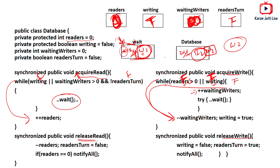If you observe this algorithm, both readers and writers get a fair share. The additional variables readers_turn and waiting_writers ensure fairness: if waiting_writers is one or more, the system asks readers to wait and gives writers a chance to write. If readers_turn is true, the system asks writers to wait and gives readers a chance to read. I hope I made myself clear — please subscribe to my channel, thanks for watching.